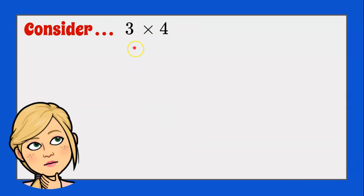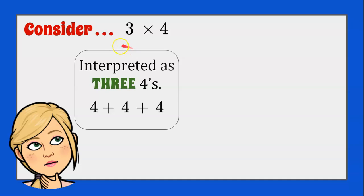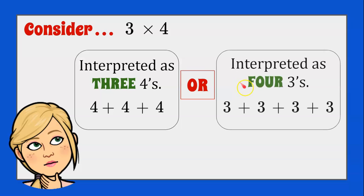Let's consider 3 times 4. This could be interpreted as 3 fours: 4 plus 4 plus 4, which is repeated addition. 4 plus 4 is 8, 8 plus 4 is 12. Or we could interpret it as 4 threes: 3 plus 3 plus 3 plus 3. So 3 plus 3 is 6, plus 3 is 9, plus 3 is 12. Instead, if you've memorized your multiplication facts, 3 times 4 is 12. So it's a shortcut.